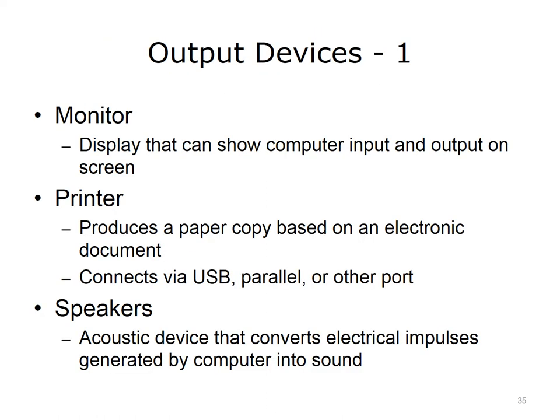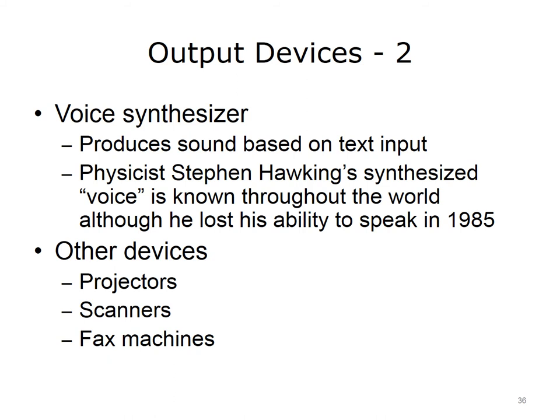Most computer users are familiar with many different types of output devices. A monitor displays computer output on its screen. A printer produces a paper copy based on an electronic document; some printers can also scan and create an electronic image of a paper document. A printer usually connects to the motherboard via a USB, parallel, or other port. Speakers are acoustic devices that convert electrical impulses generated by a computer into sound. A voice synthesizer produces sound based on text input — many Americans are familiar with Stephen Hawking's synthesized voice, as he lost his ability to speak in 1985. Other common output devices include projectors, scanners, and fax machines.